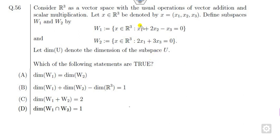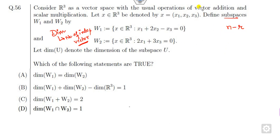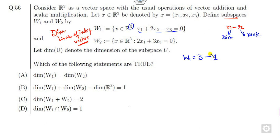Look at the next question. You have to define the subspaces and find the dimension. Dimension is nothing but the number of linearly independent vectors — that is the meaning of independent vectors in the basis. We always look at the term N minus R, where R is the rank of the matrix and N is the dimension of the space. For W1, N is 3; there is only one equation, so the rank will be 1. If rank is 1, the number of linearly independent vectors is 2, so dimension of W1 is 2.